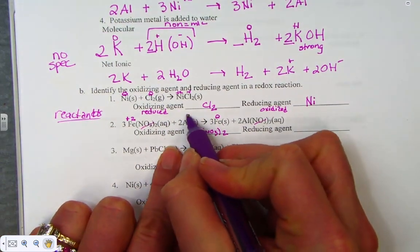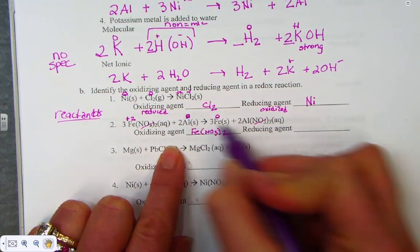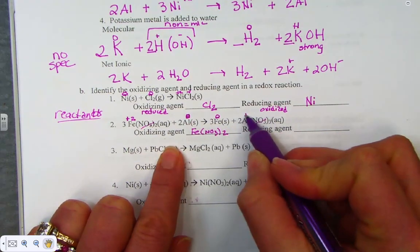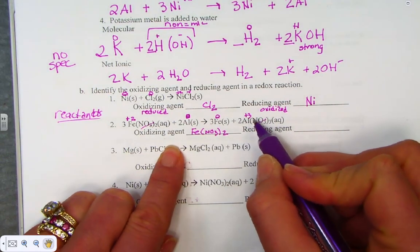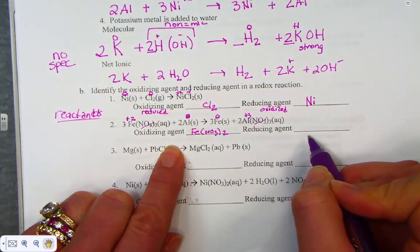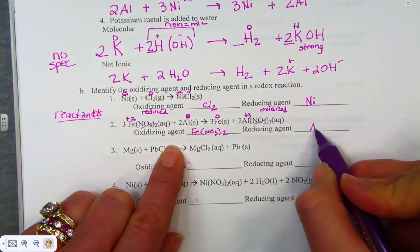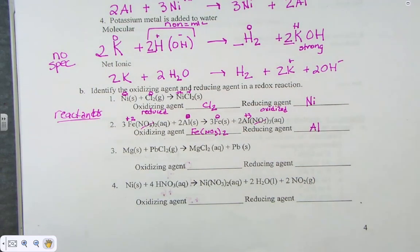Now look at aluminum. Aluminum with a 0 went to a plus 3 — it is being oxidized, and therefore it is the reducing agent. Elemental aluminum is the reducing agent.